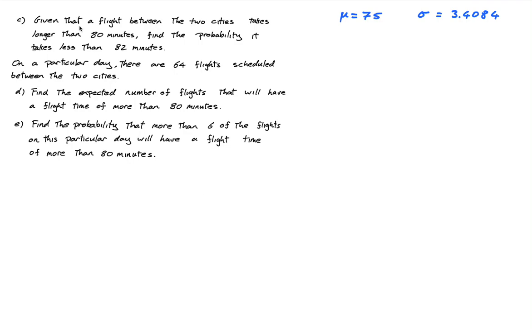Okay, so part c says given that a flight between the two cities takes longer than 80 minutes, find the probability that it takes less than 82 minutes. This is a confusing question if you've never seen these before, but when I see that word 'given' that tells me this is a conditional probability question.